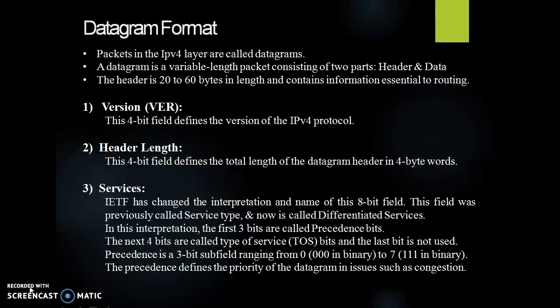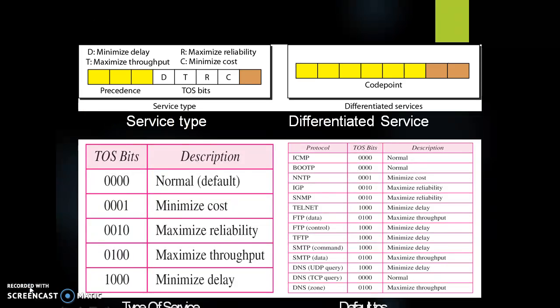Both interpretations of services are shown in this figure. The first is service type. In this interpretation, the first 3 bits are called precedence bits and the next 4 bits are called type of service TOS bits, and the last bit is not used. Precedence is a 3-bit subfield ranging from 0 to 7. The precedence defines the priority of the datagram in issues such as congestion. TOS bits is a 4-bit subfield with each bit having a special meaning. Although a bit can be either 0 or 1, one and only one of the bits can have the value of 1 in each datagram.